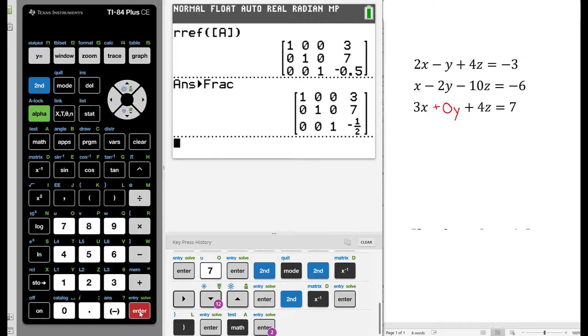This matrix now says in row 1, 1, 0, 0, 3. In row 2, 0, 1, 0, 7. And in row 3, 0, 0, 1, negative 1 half.